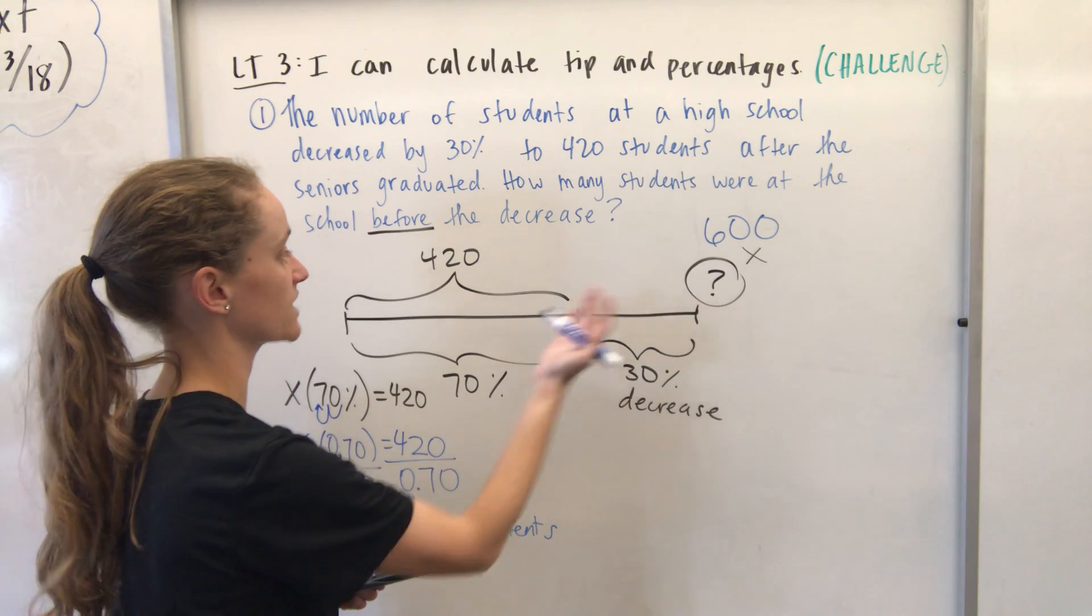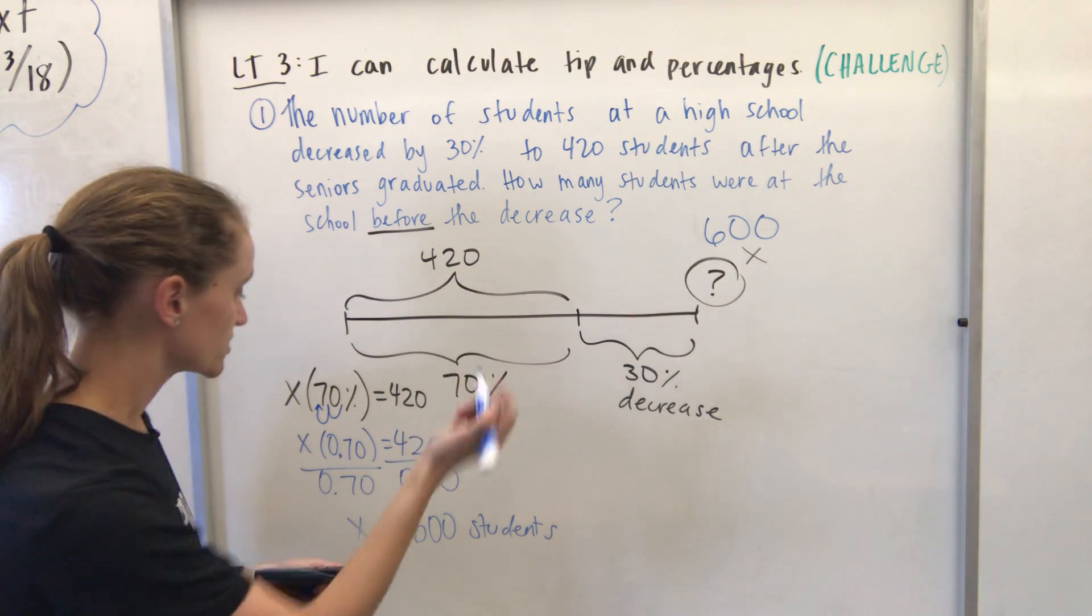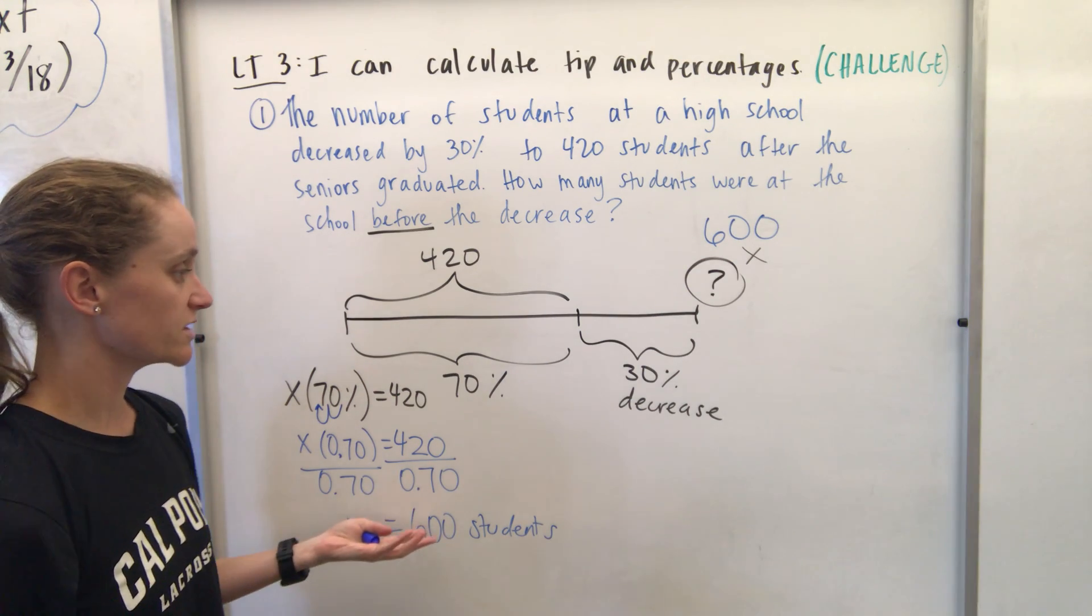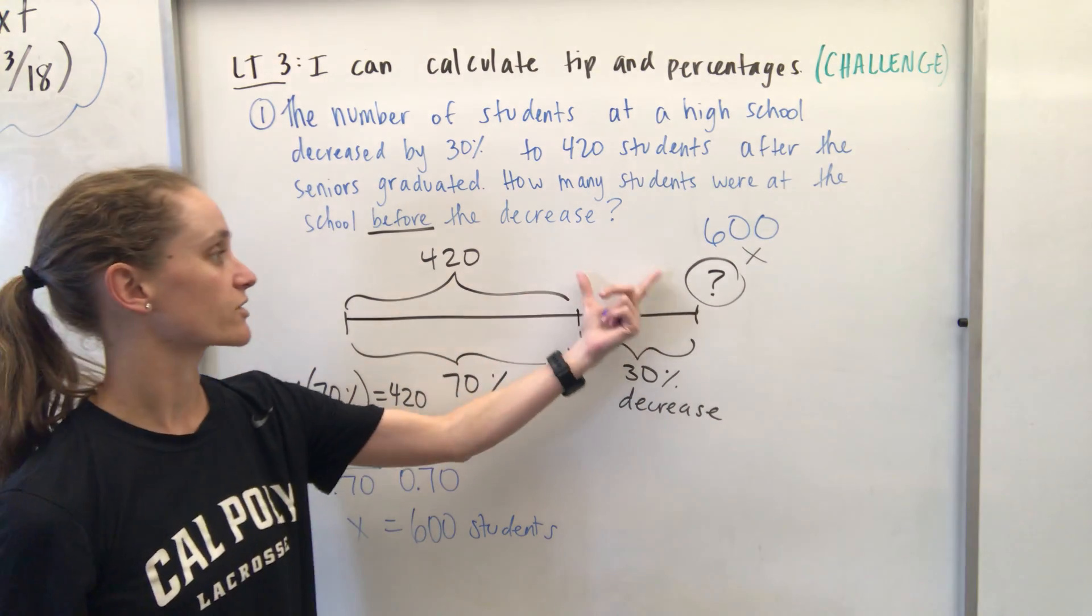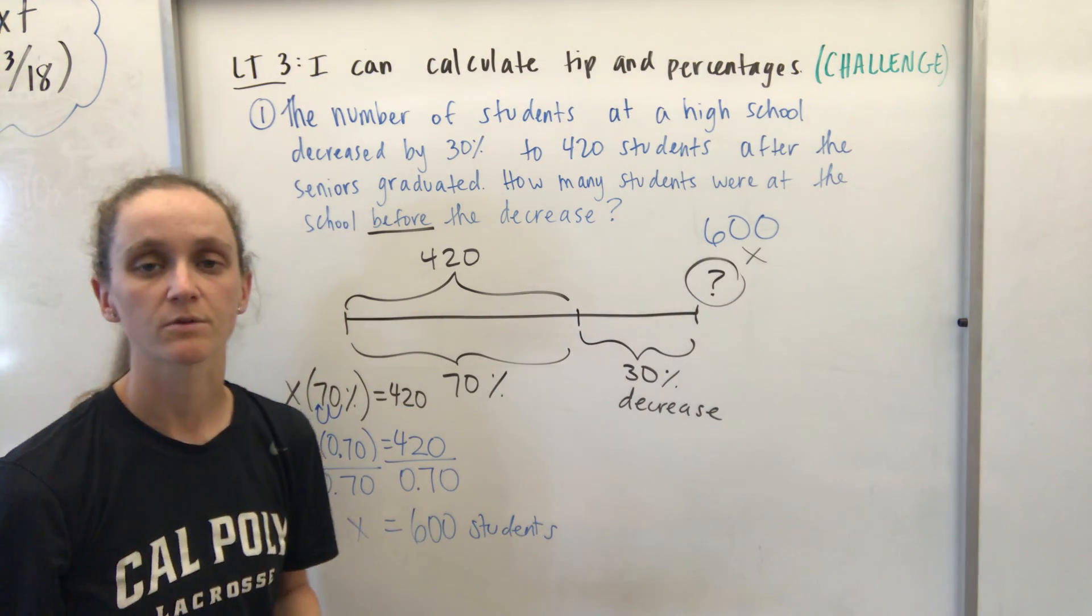And that's obviously just too much, because with a 30% decrease, there shouldn't have been that many more kids. So it's kind of nice on these ones. You can check your work. Like, if it's a 30% decrease, does it make sense that 180 kids didn't go there anymore? Yeah, it seems like it could be a plausible answer.